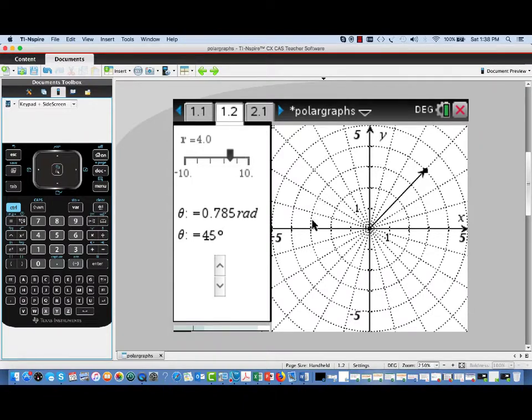The angle is expressed in both radians and degrees. Now, over in this other window, we have essentially what might be called polar graph paper. It consists of circles of constant radius and lines of constant angle.